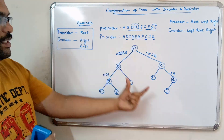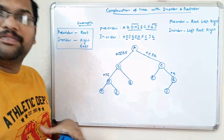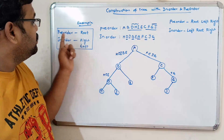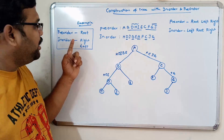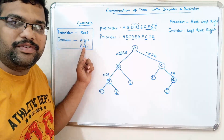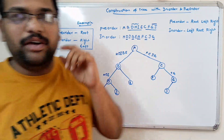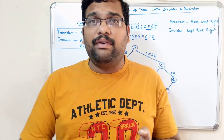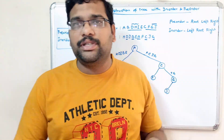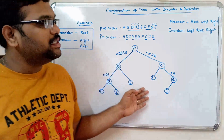This is the complete tree for the given in-order and pre-order traversal. Just follow two steps: to find the root, observe the pre-order traversal; and to find the right sub-tree or left sub-tree, go with the in-order traversal. In the previous session we covered how to find in-order and pre-order traversals — I will post the link in the description.